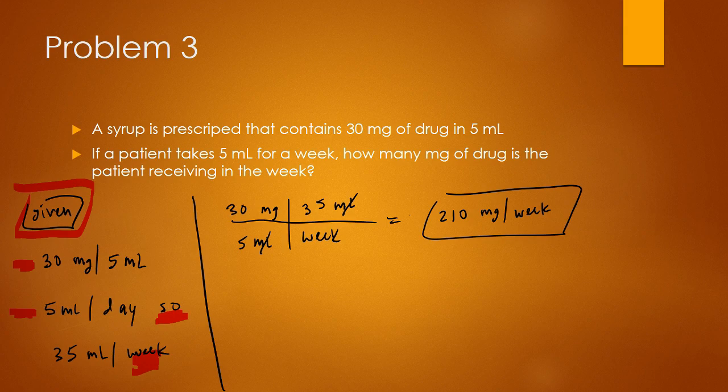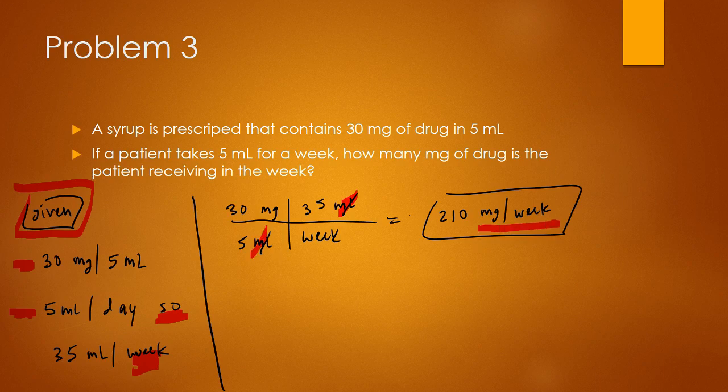Taking the proportion of the syrup, so 30 mg divided by 5 mls. You can do cross multiplication. So I put how much is needed, so 35 mls divided by week. So if you multiply the top, multiply the bottom, you can see that the units for milliliters cancel out. So then you're left with mg per week. And then multiplying 30 times 35 divided by 5, you'll get 210.